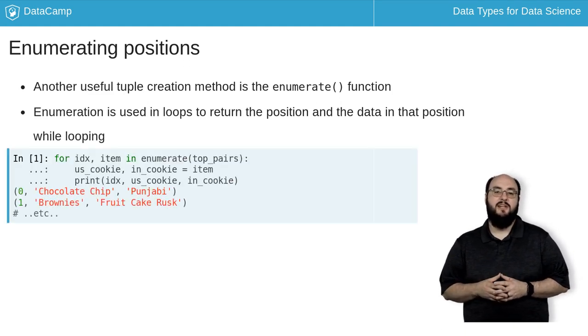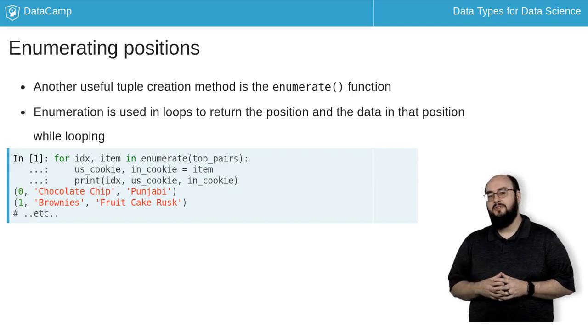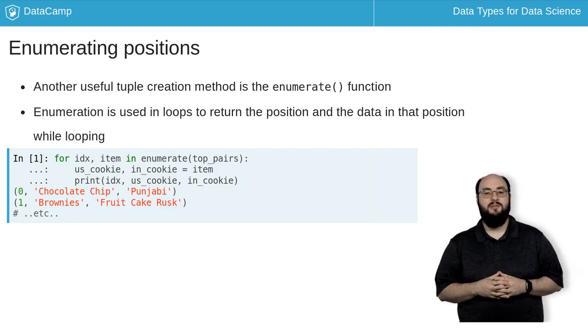We can use this to track rankings in our data or skip elements we are not interested in. Here I'm going to enumerate our top pairs list and split that resulting tuple into index and item. I can also use tuple unpacking on the item to get all three components separately. This can be exceptionally powerful.